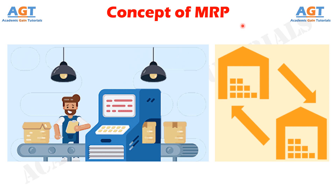JIT is a time-phased priority planning technique that estimates material requirements and schedules supply to meet demand across all products and parts in one or more plants.